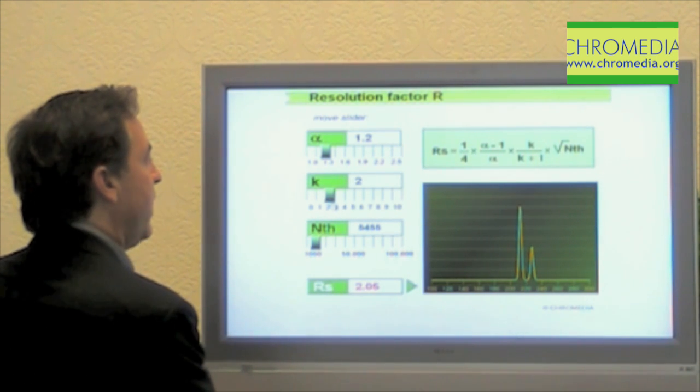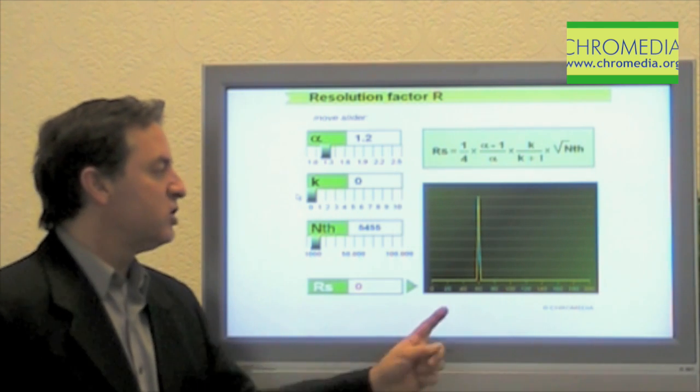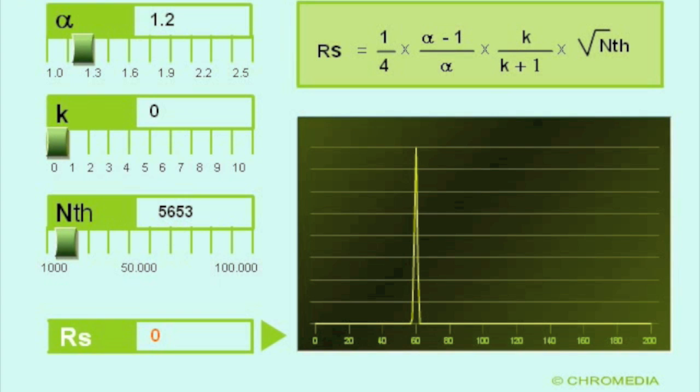So if my capacity factor is zero, in other words, if my column temperature is so hot that all the analytes spend 100% of their time in the gas phase, and they do not interact with the liquid phase at all, I get a terrible separation. In fact, I get no separation.